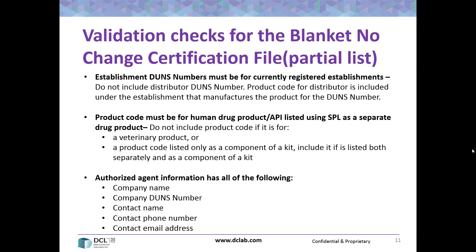Similarly, if a listing is marked as up to date but has a manufacturer in the establishment information that is not currently registered, through the benefits of electronic listings they can very easily identify those and contact the companies. This is where you'll get data deficiencies. If you have information that is no longer valid in the SPL world, that's part of what the FDA wants in terms of getting the data accurate.